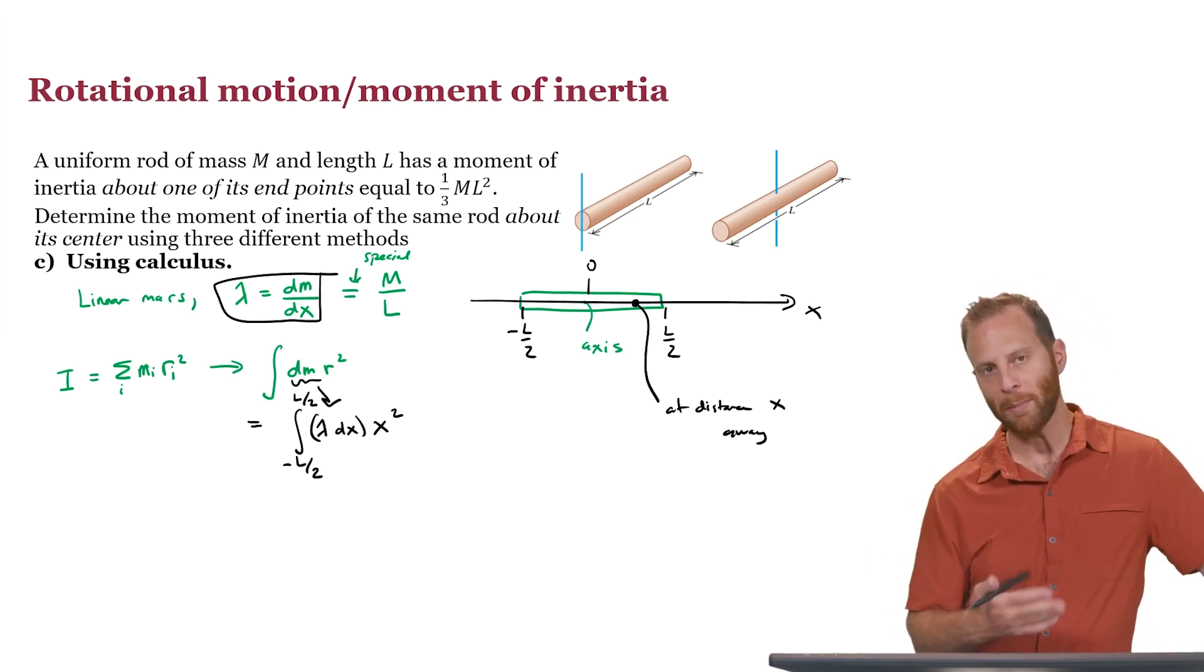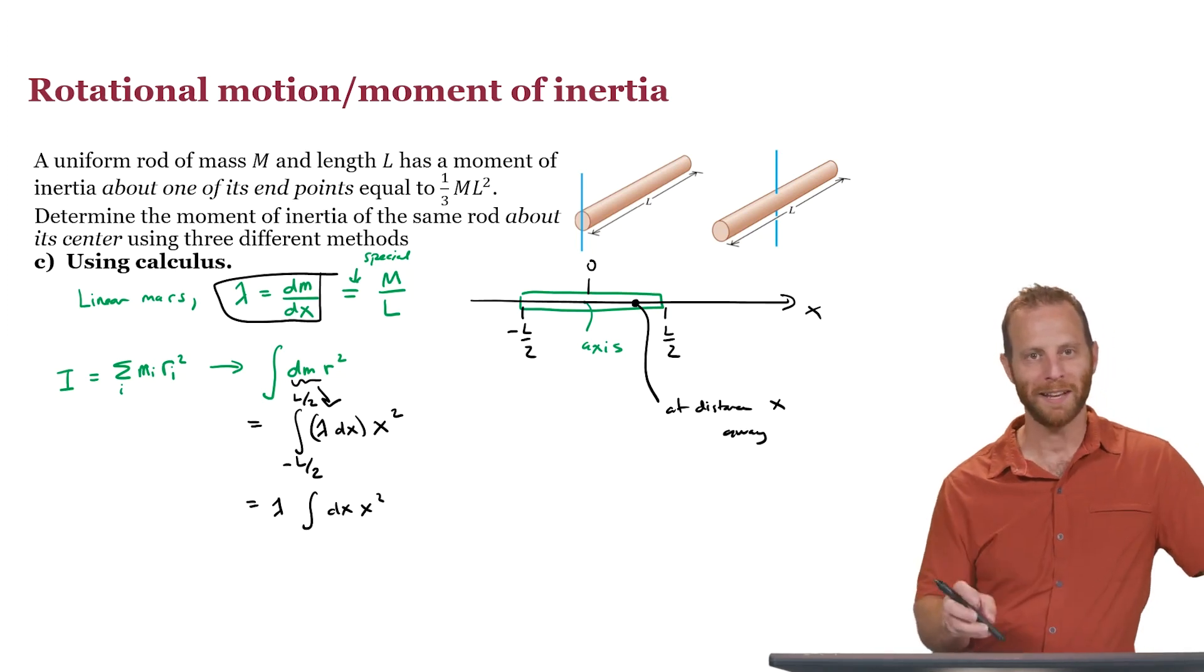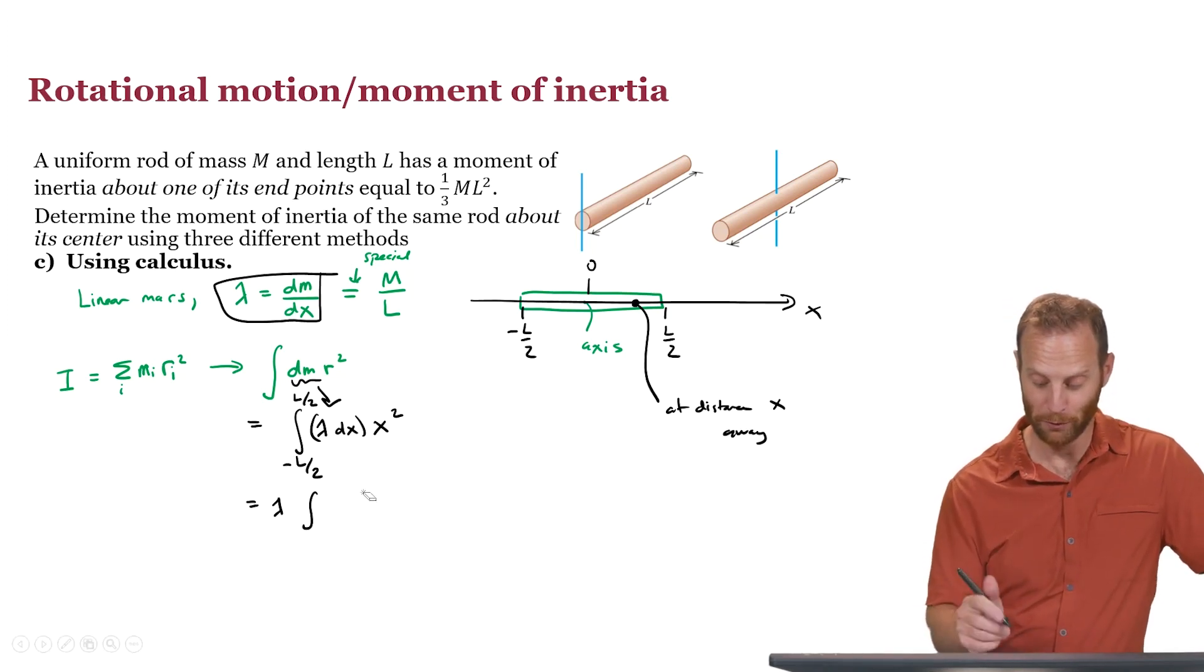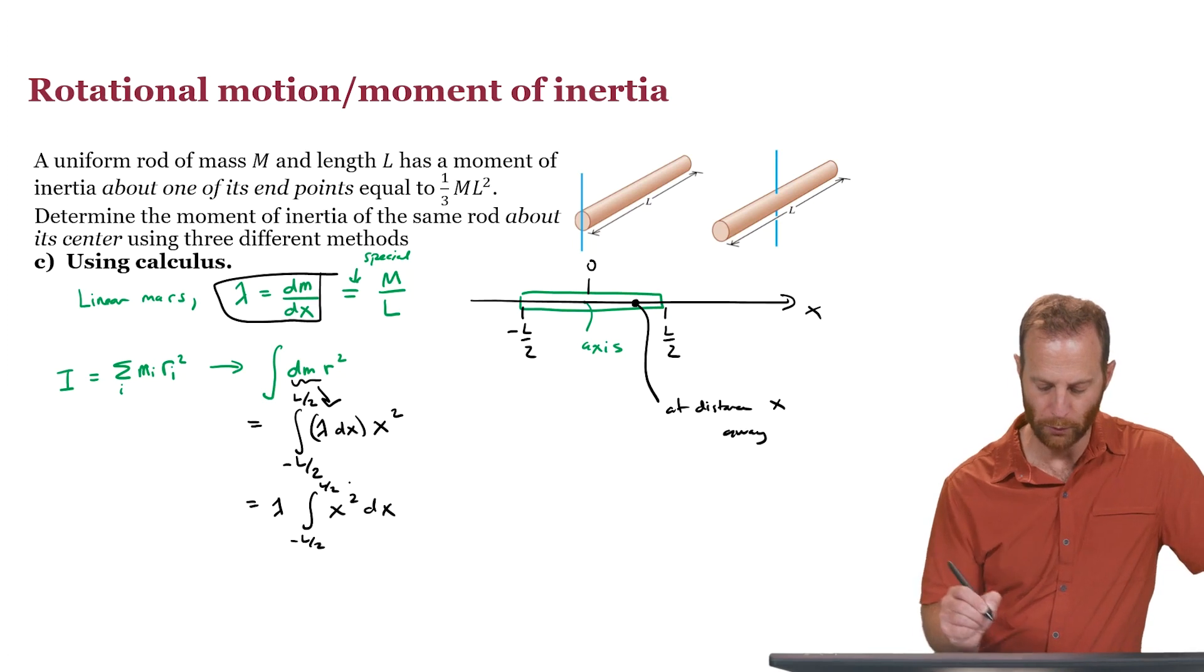Special thing for us, lambda is constant, so I'll factor that out of the integral. And you see all I've got to do is an integral of dx x squared. You can write that in another order if you'd prefer. Feel free to write this as x squared dx, as many calculus students prefer. Minus l over 2, l over 2.